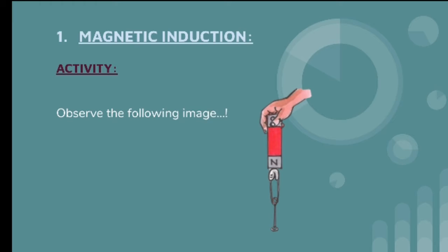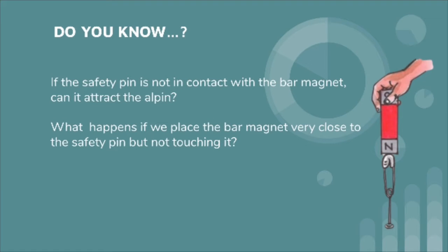Let us understand what might be the reason for this. Do you know? If the safety pin is not in contact with the bar magnet, can it attract the all pin? What happens if we place the bar magnet very close to the safety pin but not touching it? Let us understand answers for these questions by following the activity.